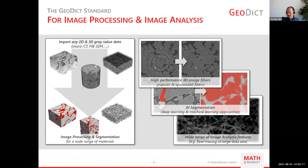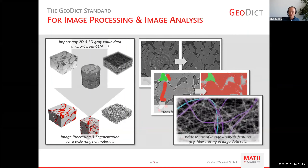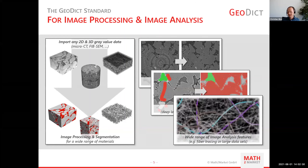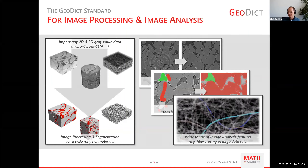The GeoDict standard for image processing and image analysis features import of any 3D gray value data and subsequent image processing and segmentation. This is performed with high-performance 3D image filters and AI segmentation, as well as a wide range of image analysis features such as fiber tracing in very large data sets, as animated here.